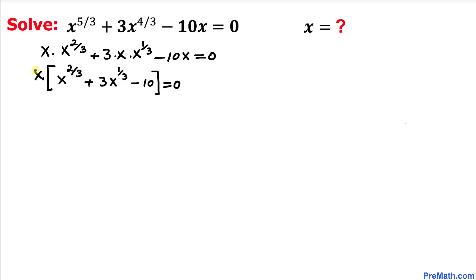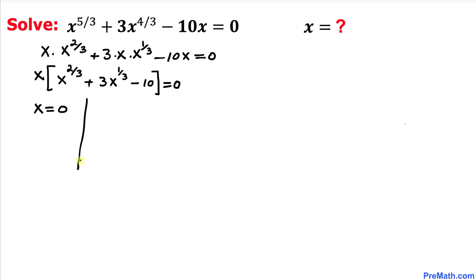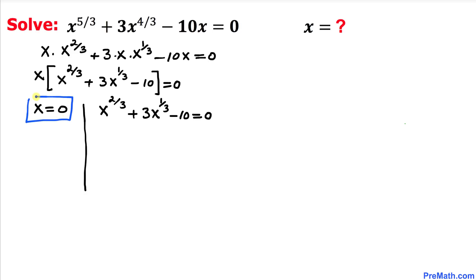Now we have two factors set equal to 0, so we can separate them. We can write x equals 0, or x to the power 2/3 plus 3x to the power 1/3 minus 10 equals 0. So x equals 0 turns out to be one of our solutions. Now let's focus on the second equation to solve for x.